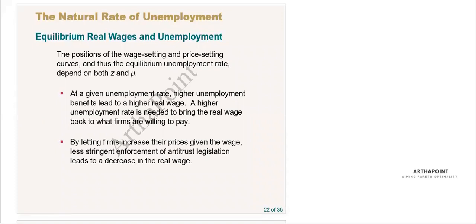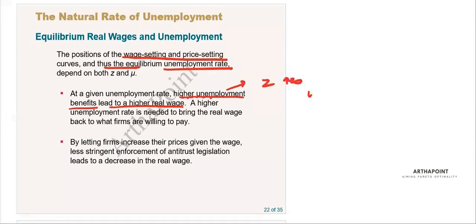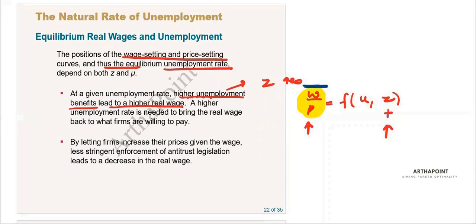The position of the wage-setting and price-setting relation curves determines the equilibrium and the unemployment rate. At any given unemployment rate, higher unemployment benefit leads to a higher real wage. As z increases, w/p is a positive function of z, so as z increases, w/p increases.